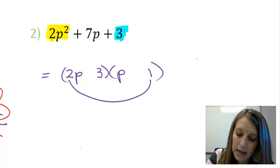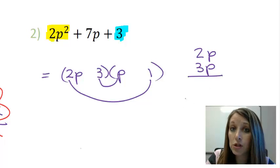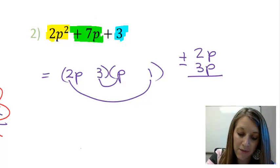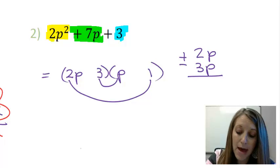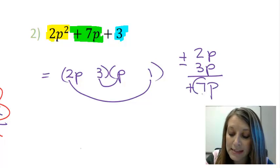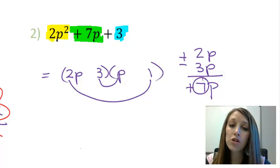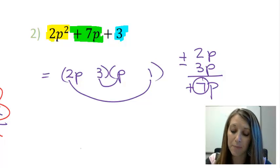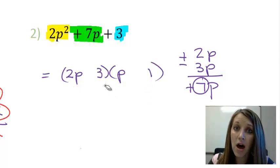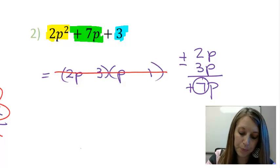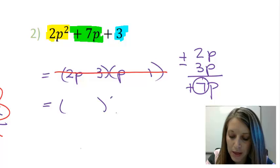I want to check and make sure that that works. My outside gives me a 2p. My inside gives me a 3p. And I either want to add or subtract these to come up with my middle term, which is a positive 7p. And it doesn't matter how I work it. I will never get a 7 in this instance. I can add them and subtract them, but I never get 7. So that means that I do not have this factored correctly at this time. Now, that doesn't mean I cannot factor it. So what I suggest that you do is you cross it out and you try again.